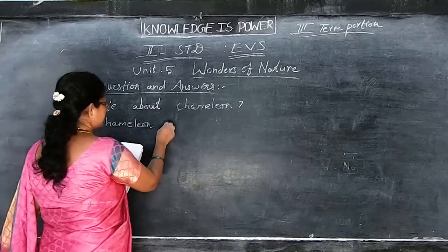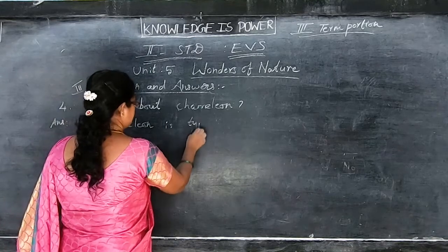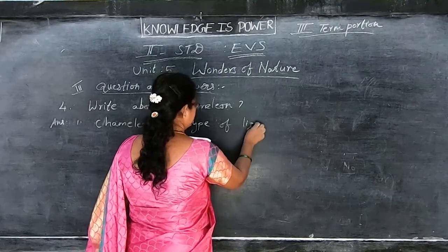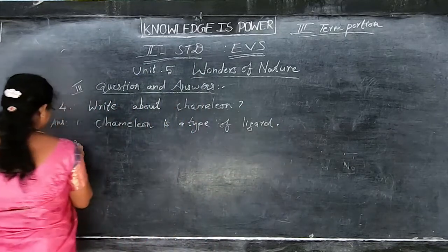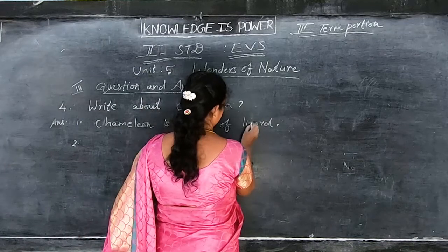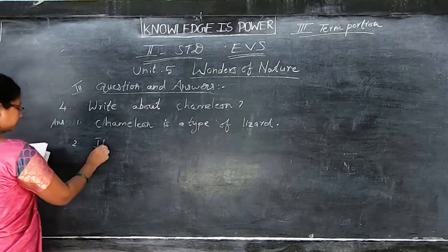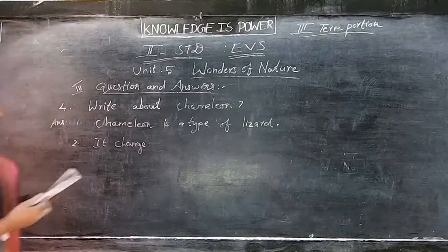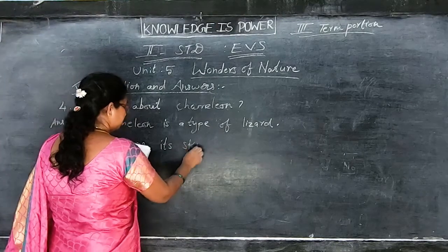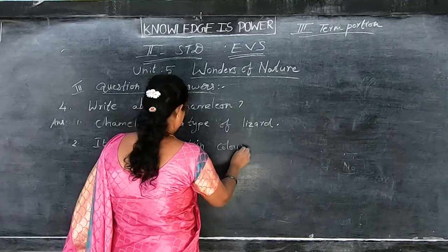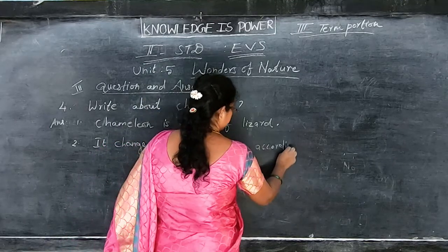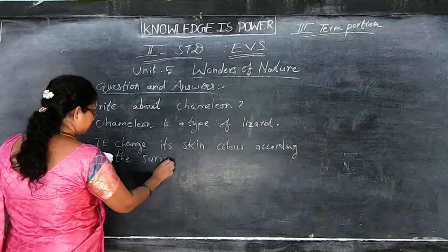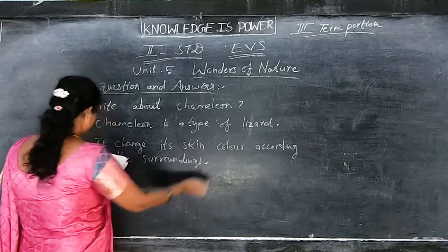Chameleon is a type of lizard — L-I-Z-A-R-D. It changes its skin color S-K-I-N C-O-L-O-R according to the surroundings S-U-R-R-O-U-N-D-I-N-G-S. Two points are enough, children.